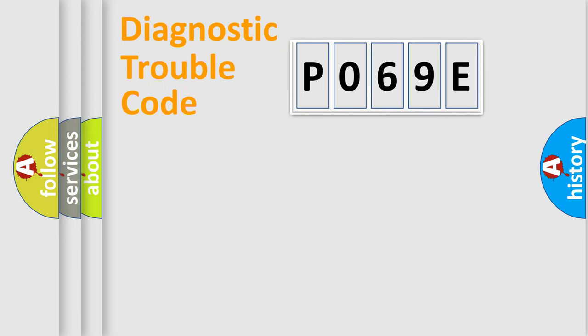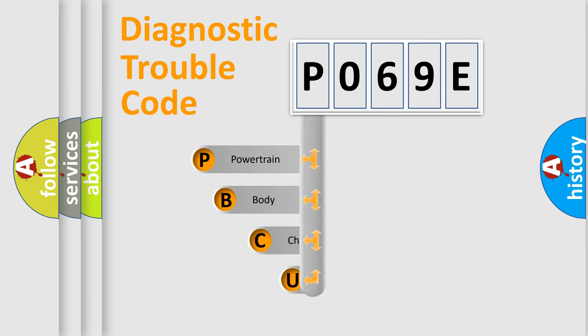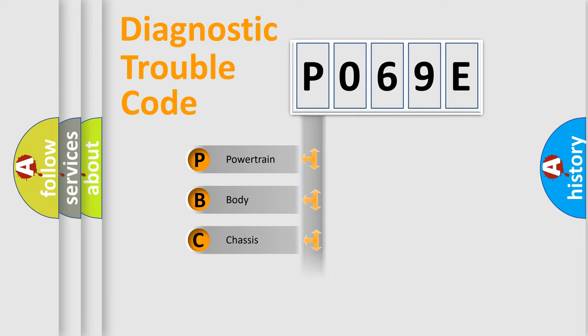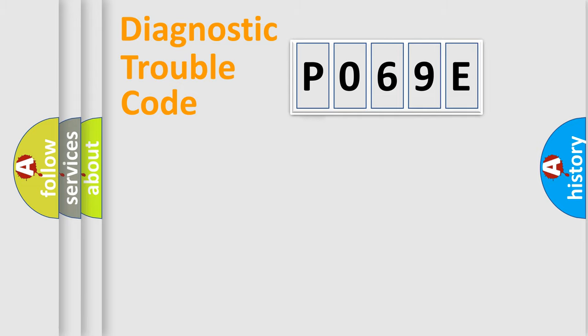First, let's look at the history of diagnostic fault code composition according to the OBD2 protocol, which is unified for all automakers since 2000. We divide the electric system of an automobile into four basic units: Powertrain, Body, Chassis, and Network.